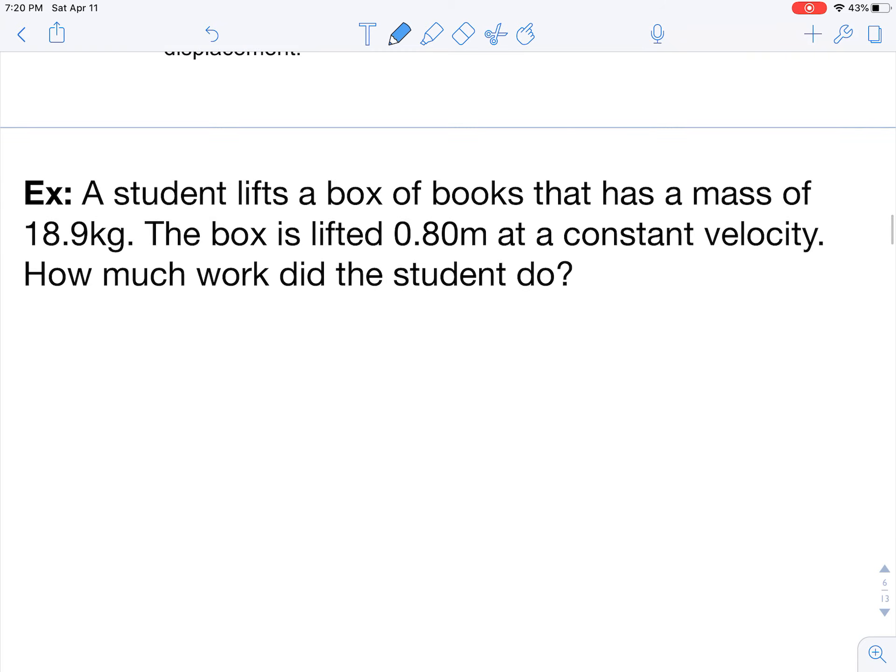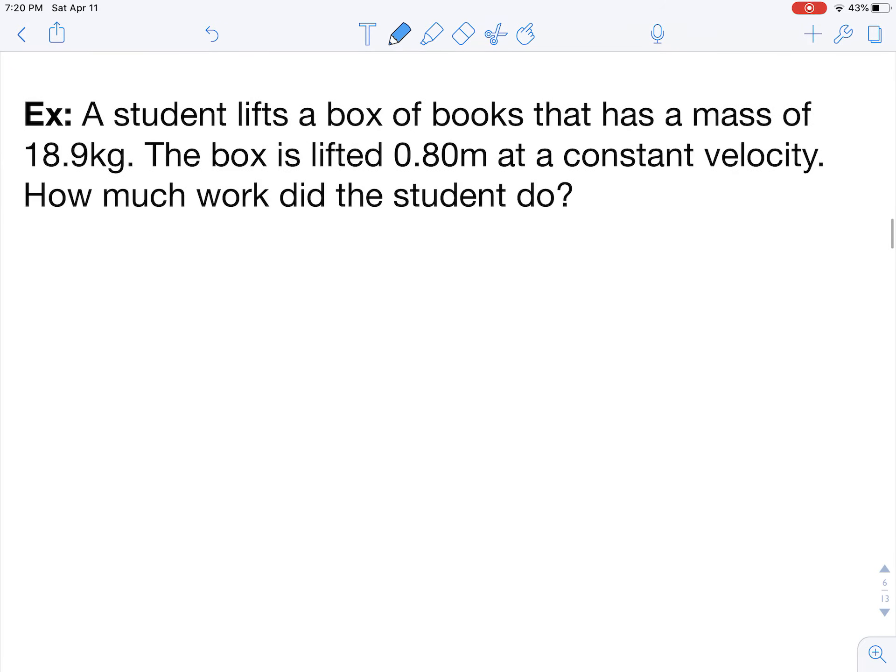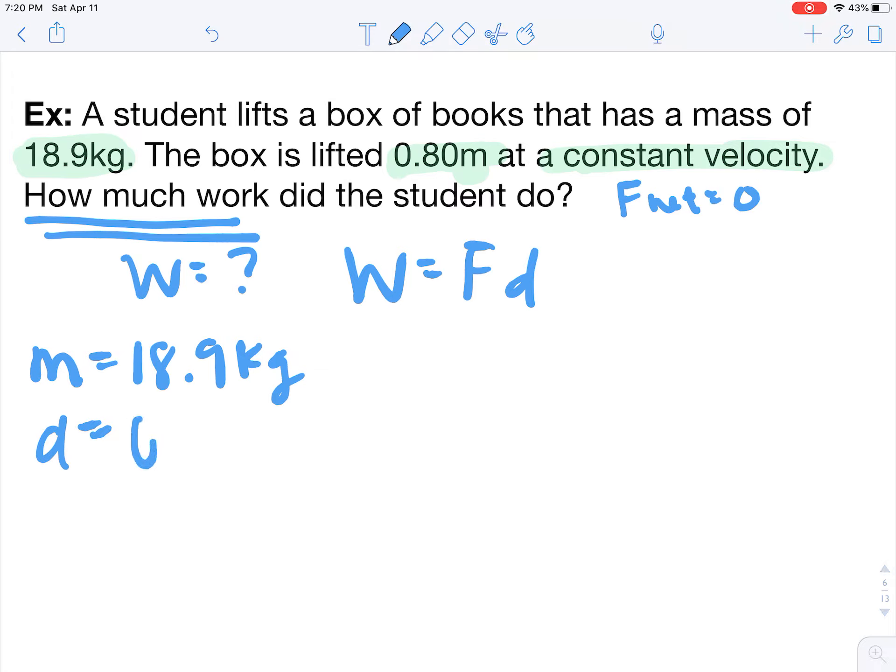So here is an example of some math you might see involving work. A student lifts a box of books that has a mass of 18.9 kilograms. That box is lifted 0.8 meters at a constant velocity. So remember when we had forces before and we saw that phrase constant velocity, that meant that the net force is zero, all of the forces acting on an object are equal to each other. Just something to keep in mind. How much work did the student do? So work is typically force times distance and they didn't give us a lot of information, they just gave us mass and the height it was lifted. I guess that could be a distance, so we are going to do that as our distance but they didn't really give us a force.